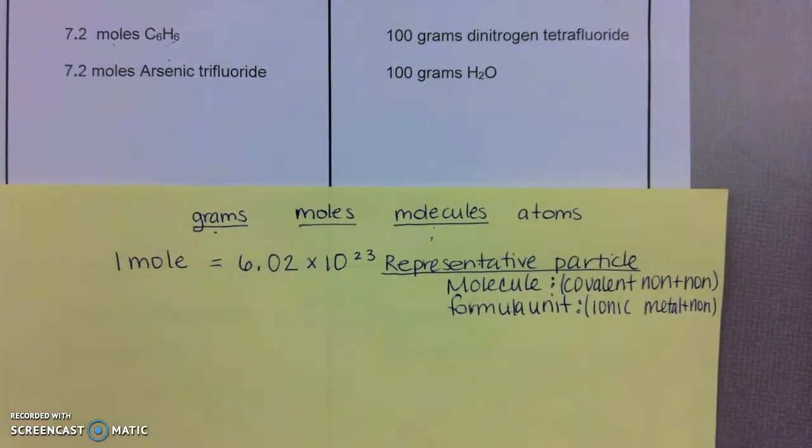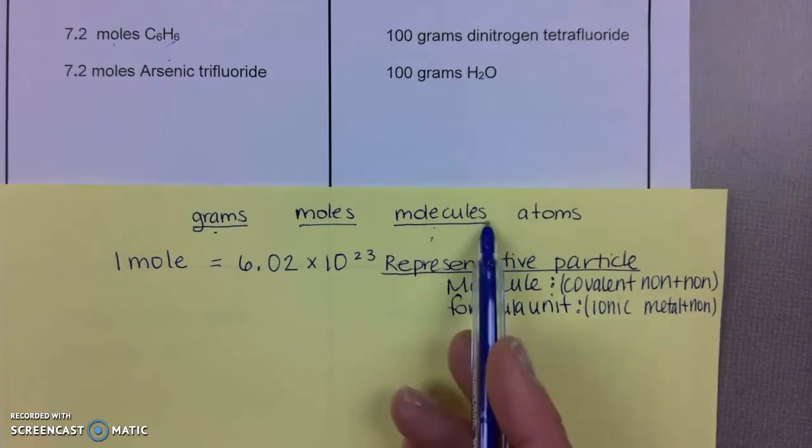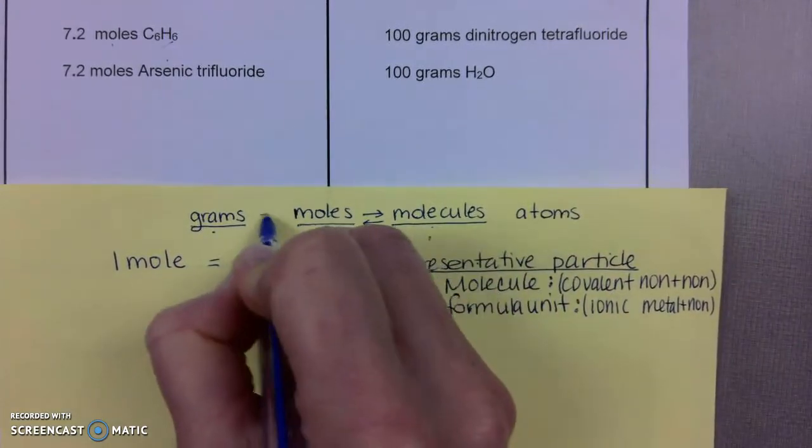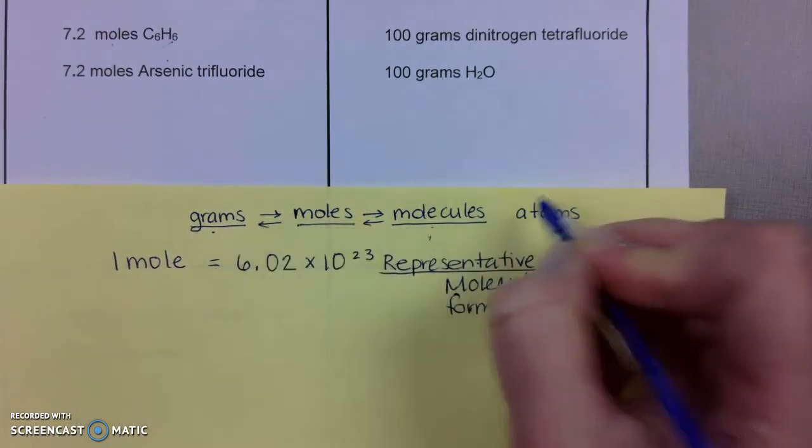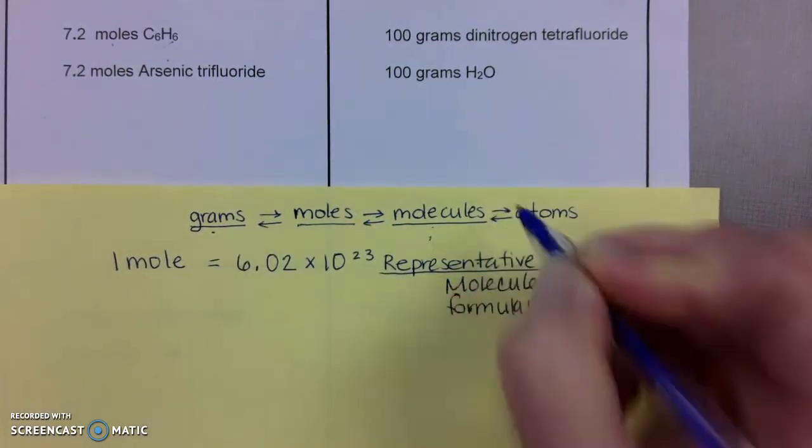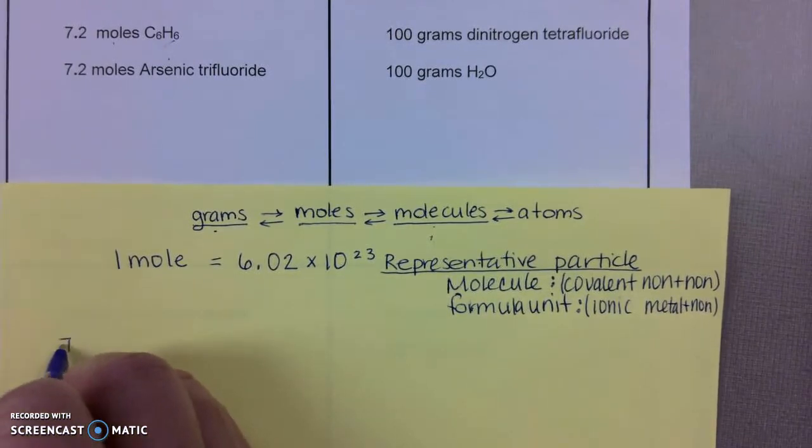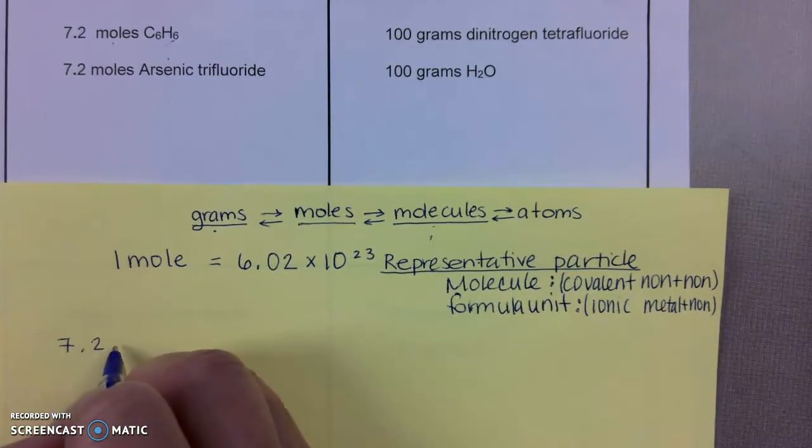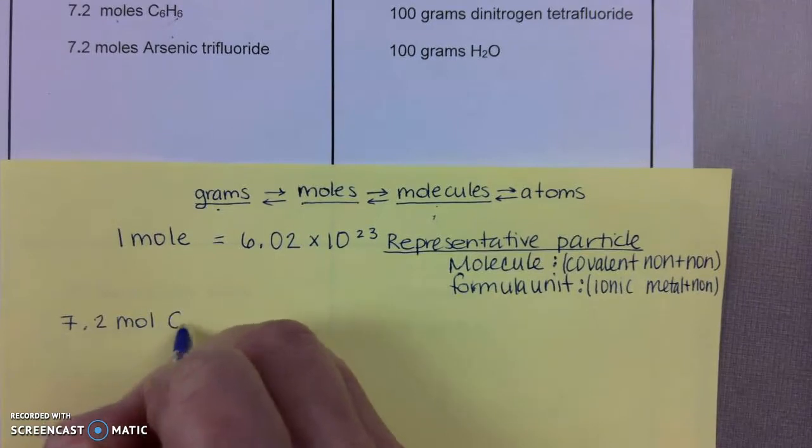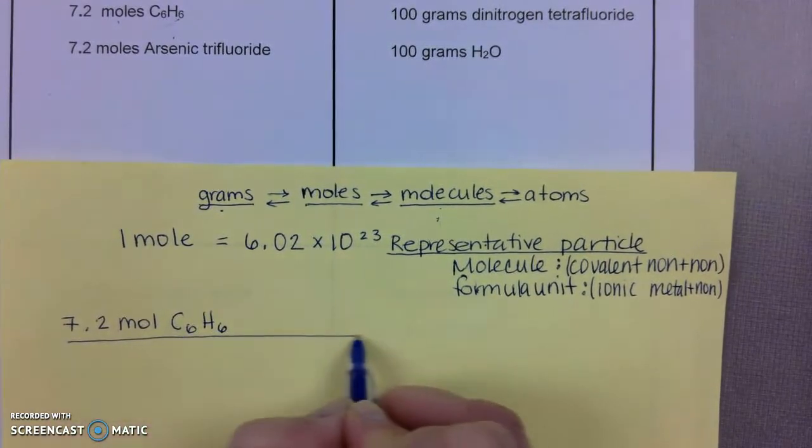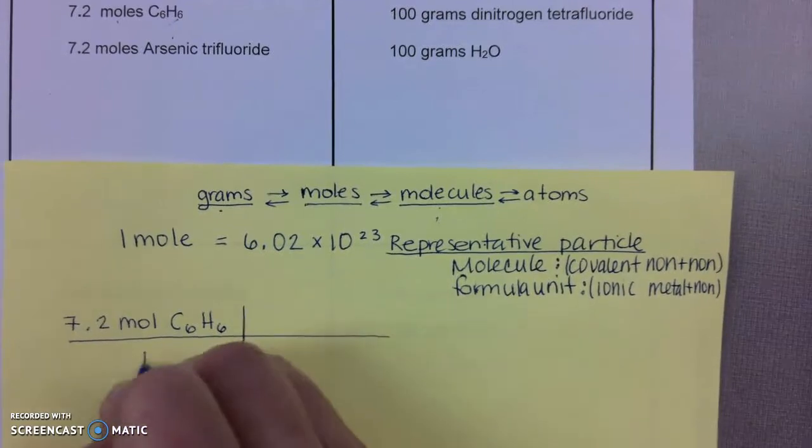Let's start with the math then. So we have moles, and we want to convert into molecules. Remember, we can go either way, back and forth, and we know this information. So let's place it down into a T-chart. 7.2 moles of C6H6, our starting material, is all over one.